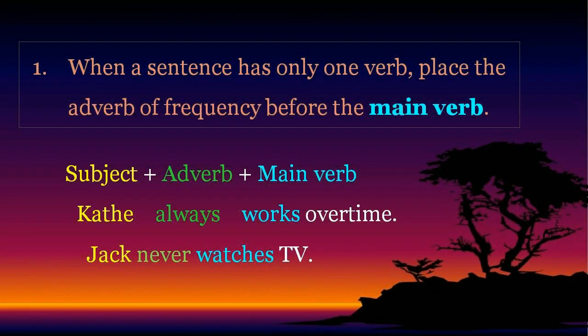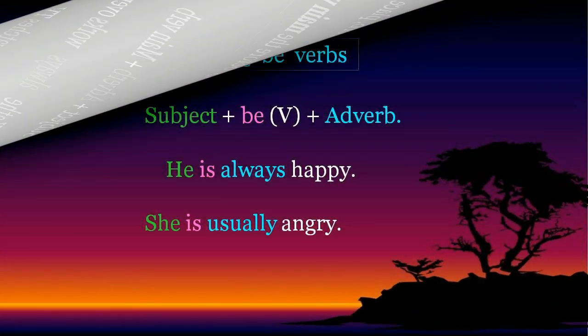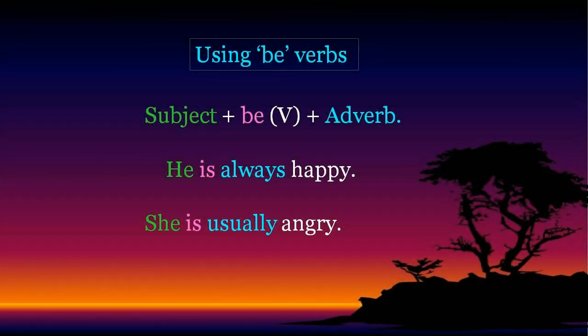Rule number one: when a sentence has only one verb, place the adverb of frequency before the main verb. The sentence pattern is: subject + adverb + main verb. Example: 'Kathy always works overtime.' 'Jack never watches TV.' When using 'be' verbs, the pattern is: subject + be verb + adverb. Example: 'He is always happy.'